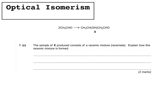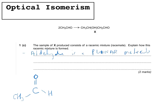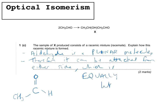Here is another typical question: a sample of X produced consists of a racemic mixture. Explain how this racemic mixture is formed. The compound is an aldehyde, and the key point is that the aldehyde is a planar molecule — that earns one mark. Because it is planar, it can be attacked from either side of the plane, and that attack is equally likely from either side — that earns the second mark.